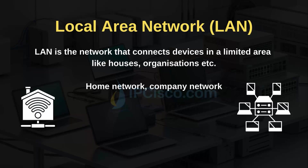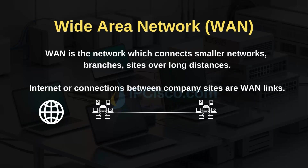Being small is not a requirement for a LAN, because there can be LANs that connect thousands of people in companies. A LAN is the network that connects devices in a limited area like houses and organizations. Wide Area Network is another network type — it especially bridges between smaller networks and connects networks over large geographical areas. A WAN is the network which connects smaller networks, branches, and sites over long distances.